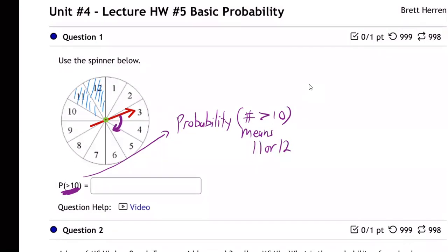So if you spin that spinner around at random, what's the chance it's going to come out a number greater than 10, meaning what's the chance it's going to end up on the number 11 or 12? Well, that's going to be two out of 12, isn't it? Because that's two out of the 12 regions.